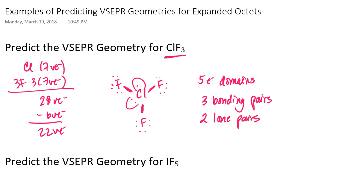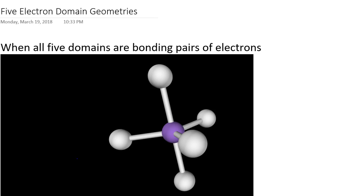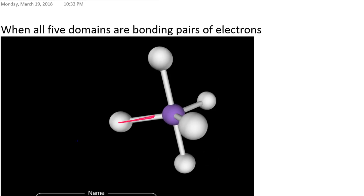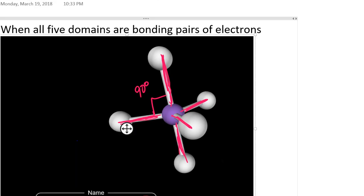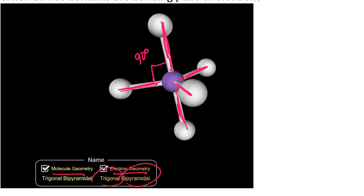Let's take a look at what the five electron domain geometries look like. If I have five electron domains, the way they would be arranged around the central atom is like this: I'd have three atoms in a flat plane around the central atom, and then the other two would be situated above and below. That gives me a 90 degree bond angle when I consider the atoms above and below the central atom compared to those in the horizontal plane.